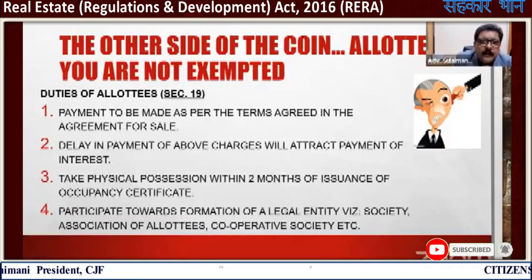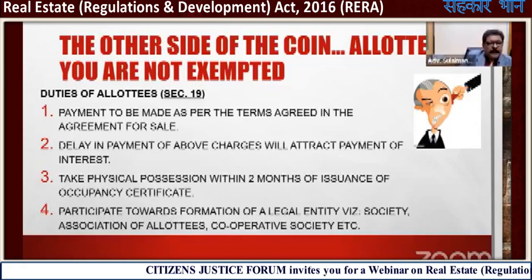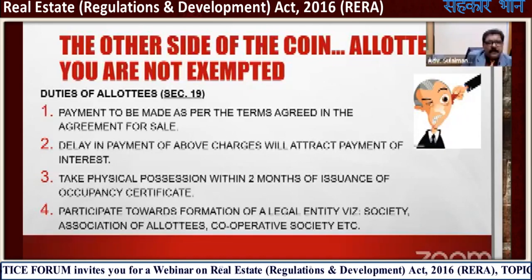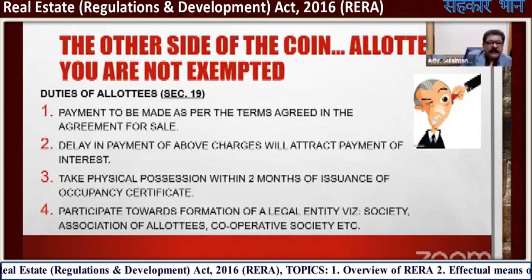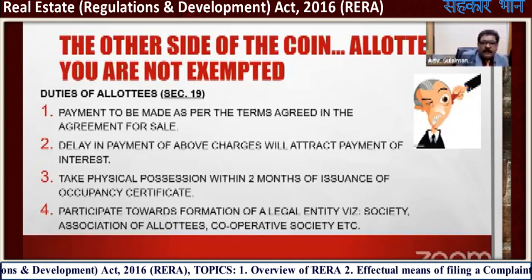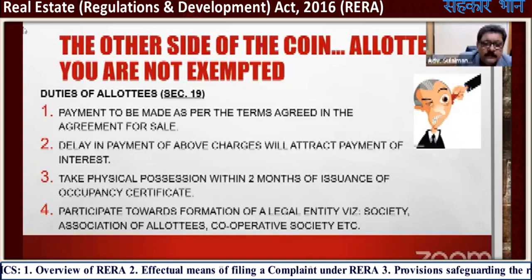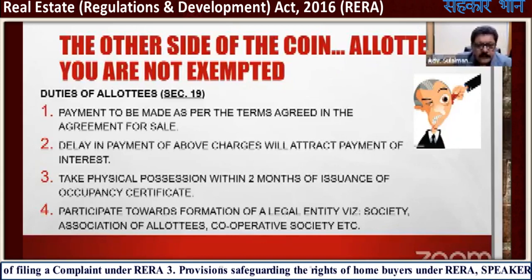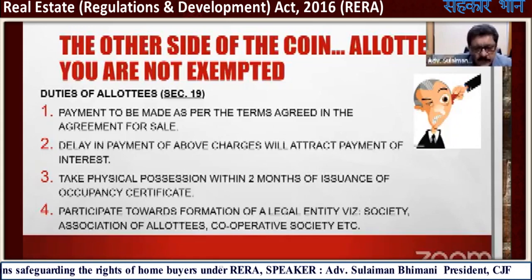The other side of the coin — allottees, you are also not exempted. Duties of allottees under Section 19: payment to be made as per the terms agreed in the agreement for sale. Delaying payment will attract interest. Take physical possession within two months of issuance of the occupancy certificate. Participate towards the formation of a legal entity — society, association of allottees, or cooperative society. Many times the home buyer was defaulting in payment, and now the data comes into the agreement.